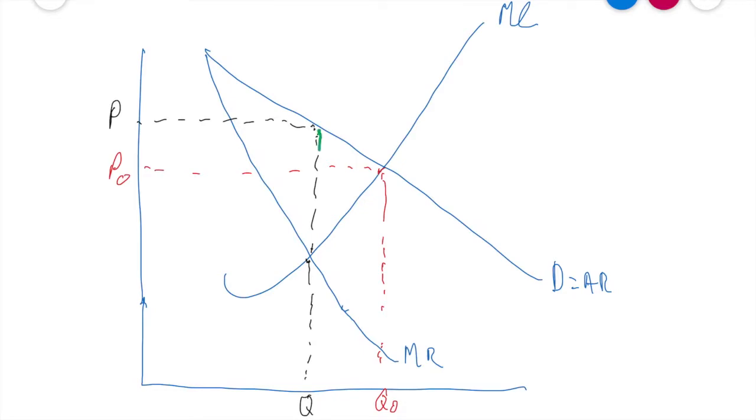Therefore we can draw a deadweight loss here in the boundary of the area from where our price-quantity line is for where the monopoly operates, up to the point where the optimum point would be for the market to operate, and we draw that little triangle there.